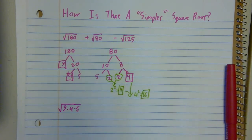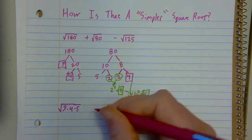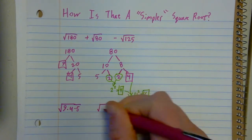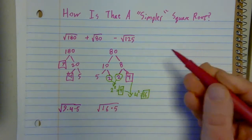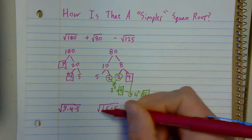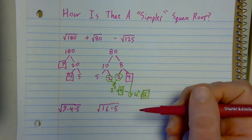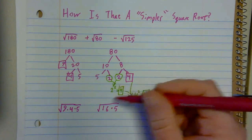There was nothing else I could do. So I have 16 times 5. And maybe I didn't see this. Maybe I ended up with 4 times 4 times 5. That's fine because those 4's would just turn into 2's.